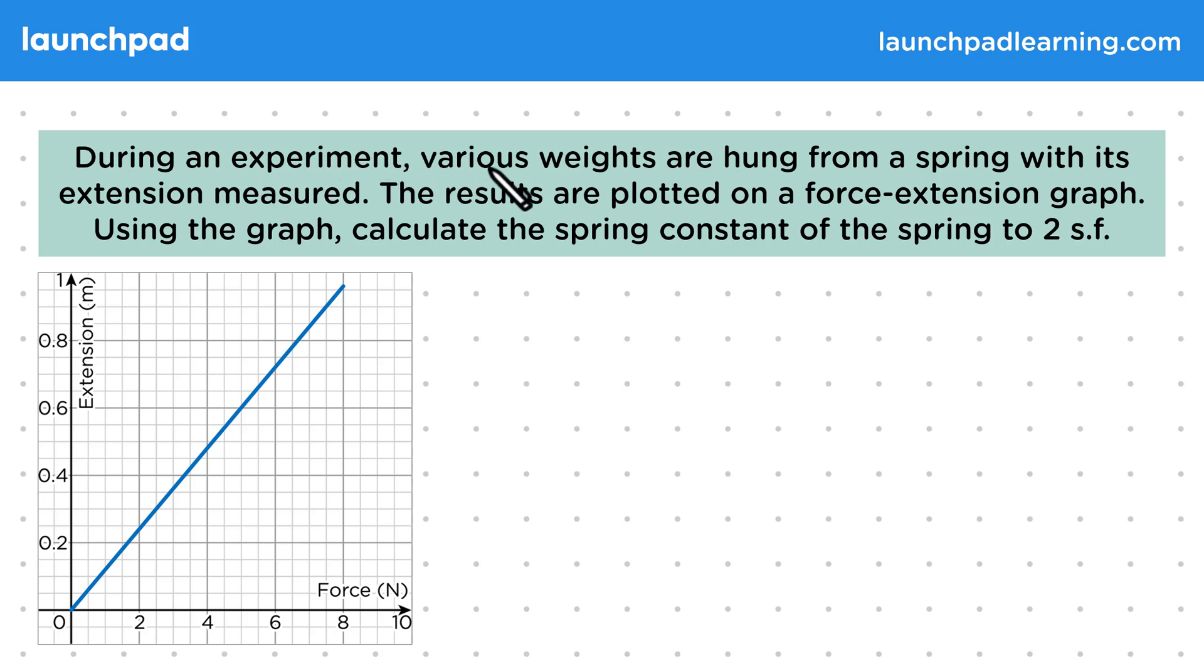During an experiment, various weights are hung from a spring with its extension measured. The results are plotted on a force extension graph. Using the graph, calculate the spring constant of the spring to two significant figures. So this is one way we can measure the spring constant of a spring.